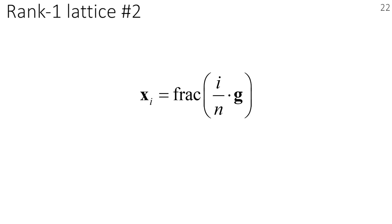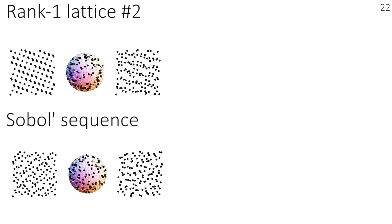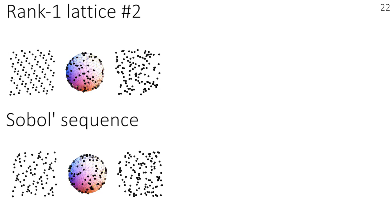Let's look at the last sequence. This time, we use the rank 1 lattice. Its generator vector components are identical to the previous one, and the dimensions are permuted to make the first 2D projections more uniform. We got a result very close to the Sobol sequence. Is such a sequence capable of estimating path integral?